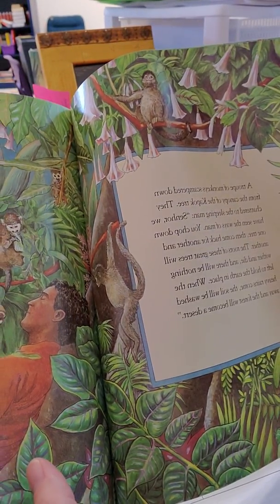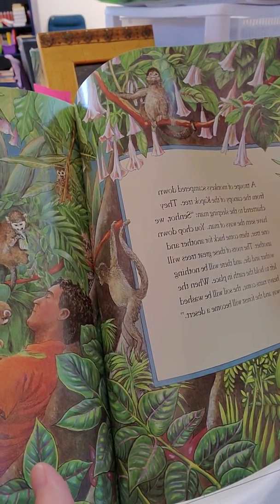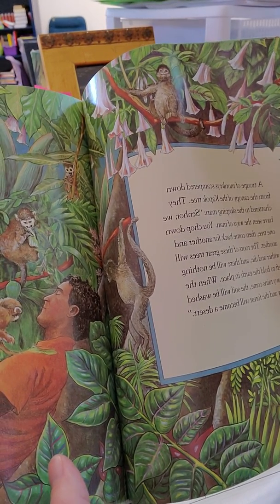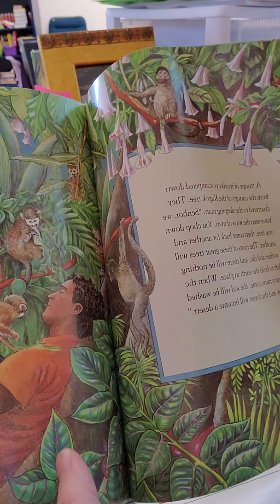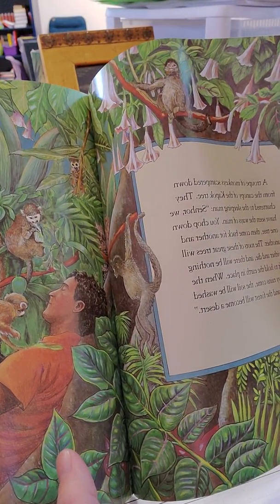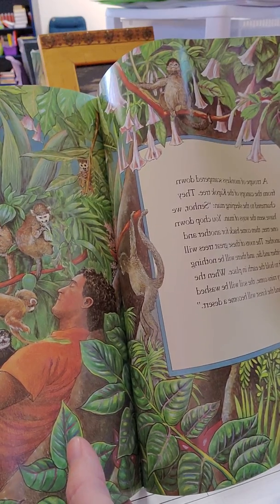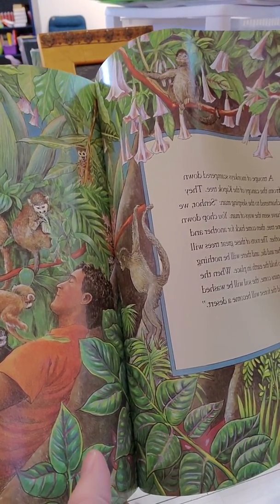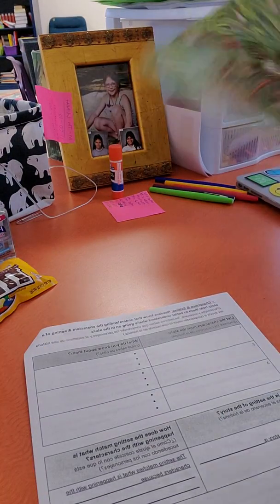A troop of monkeys scampered down from the canopy of the Kapok Tree. They chattered to the sleeping man. Senor, we have seen the ways of man. You chop down one tree, then come back for another and another. The roots of these great trees will wither and die, and there will be nothing left to hold the earth in place. When the heavy rains come, the soil will be washed away, and the forest will become a desert. So I'm going to go ahead and pause here.